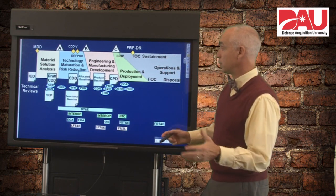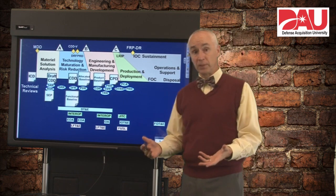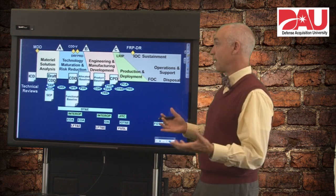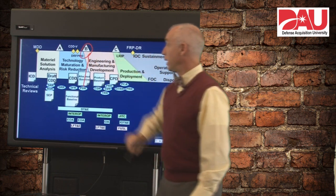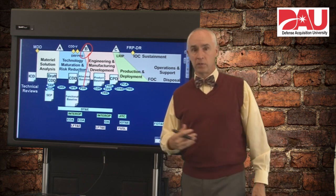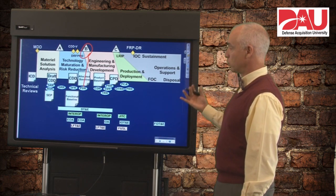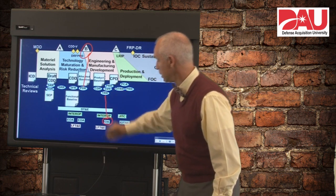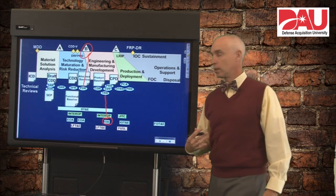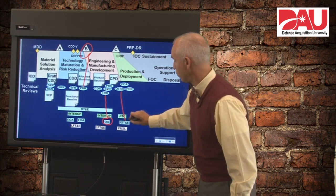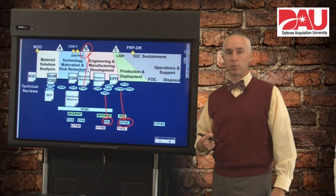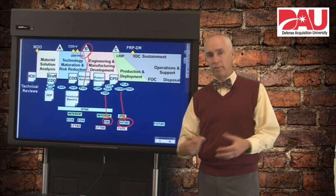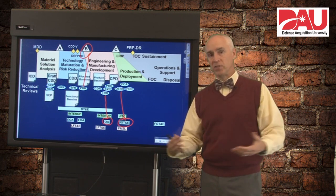As an example, a Preliminary Design Review gives us a look at the preliminary design and the allocated baseline, providing the data we need to say the design is mature enough for Milestone B and going into engineering and manufacturing development where we can do detailed design work. Our Test Readiness Reviews are generally lined up with major test events — the TRR gets us ready for the operational assessment at the end of engineering and manufacturing development, while the OTRR gets us ready for initial operational test and evaluation in production and deployment. All of these have a timing that makes sense based on the information we're trying to gather to say we're ready for that next big decision.